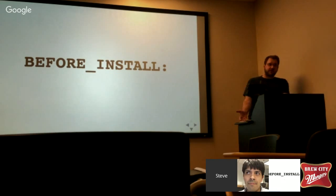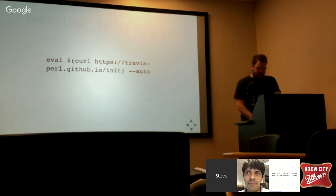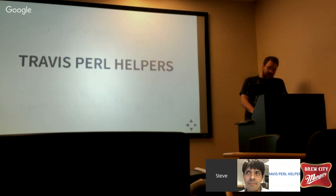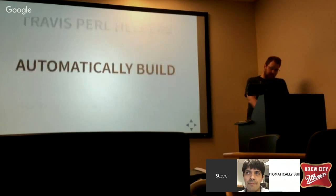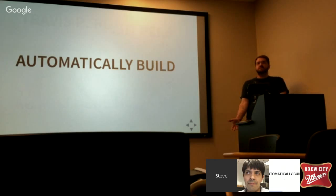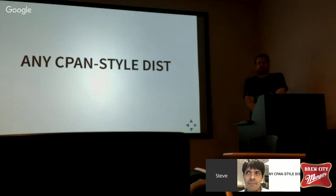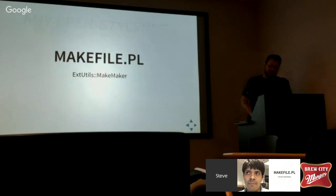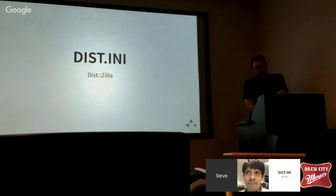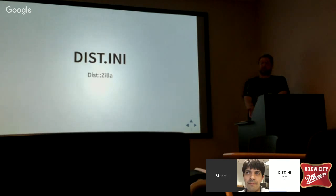No sudo allows them to easily clean it up and gives you a faster build. But you can use sudo to install pre-reqs — for example, if you need to install a database, libssl, or anything else, you can use sudo and apt-get. The last line is the before_install, which is where we did the very dangerous thing — getting the Travis Perl helpers. The Travis Perl helpers will automatically build just about everything you need and run your tests. Any CPAN-style dist will work — build.pl, makefile.pl, Module::Build, ExtUtils::MakeMaker, Dist::Zilla.